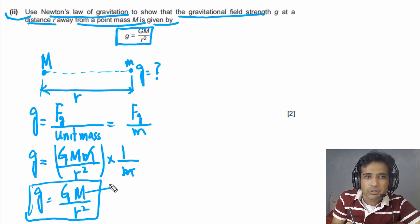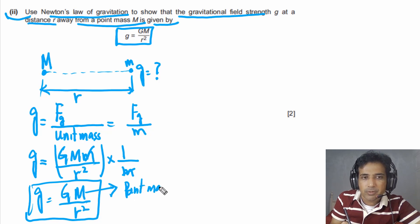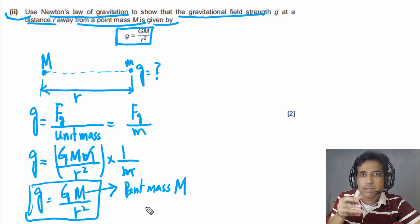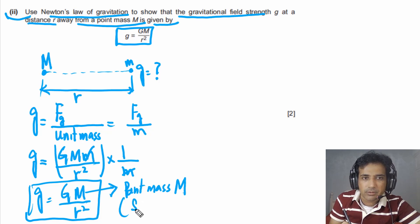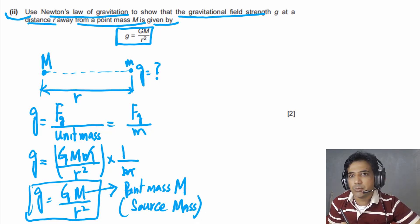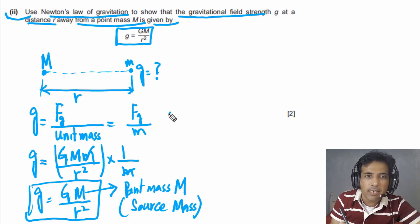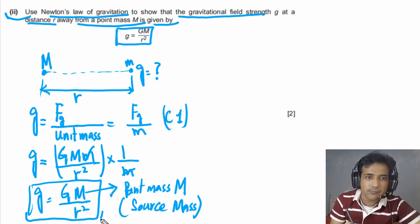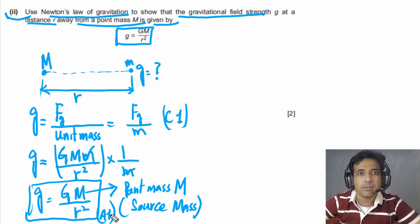The first mark for this question is awarded if you write that gravitational field strength is gravitational force per unit mass. The second mark is for correctly deriving the equation g = GM/r². There are two marks for this question.